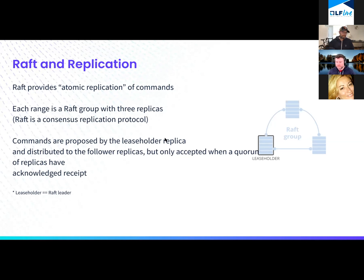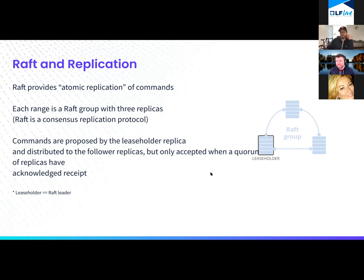I know there was a question about split brain — there's definitely a great blog post about how we've dealt with that in CockroachDB. There have been some recent issues about split brain and distributed consensus. We use Raft. There's a Raft group in CockroachDB — a Raft group is basically replicas of data and a leaseholder or Raft leader where most transactions will commit.